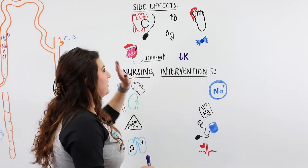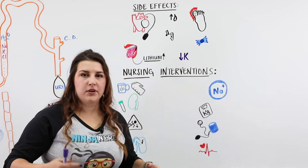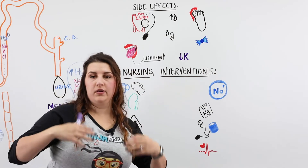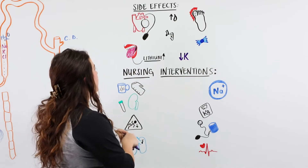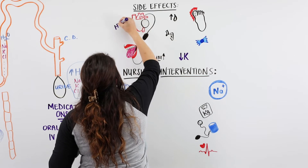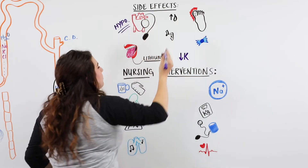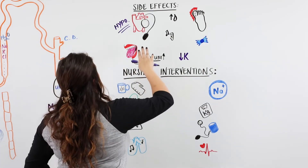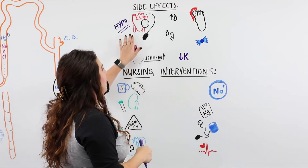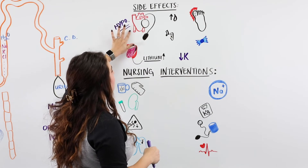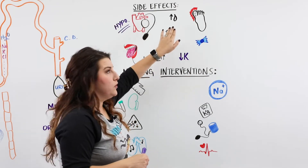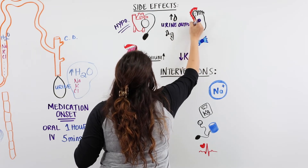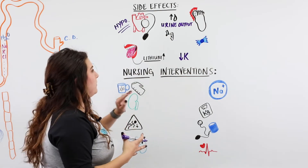Now let's talk about side effects. Because the mechanism of action is to increase diuresis and draw fluid off the body, think about side effects in terms of losing fluid. The first is hypotension — we're drawing off fluid, and we might overdo it, causing the patient to excrete too much volume and become hypotensive.